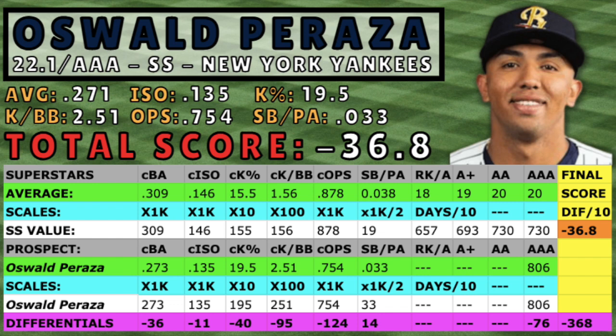Much like Volpe, Peraza has yet to put up the astonishing numbers that he did in 2021, but he's having a very good season and is still one of the top shortstop prospects in the upper minors. So far this year, he's hitting .253 with 12 homers, 22 stolen bases, and a 23.3% K percentage. Peraza didn't line up quite as well as Volpe career-wise versus the superstars. He lost points in every offensive category except stolen bases per plate appearance, and his final score in this episode is negative 36.8. Although his score is low, Peraza possesses some very exciting tools and could receive a call-up at any moment in 2022.